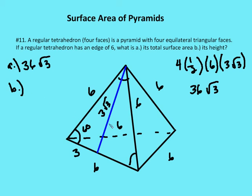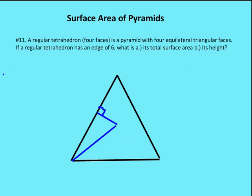The next part is a bit more complicated — it's best to draw a picture looking straight down on the tetrahedron at its base. We're asked to find its height, which is the distance from a vertex all the way down to the base. We need to find the point at the center of the base, then we can use the edge of six that goes directly up to the vertex to find the height.